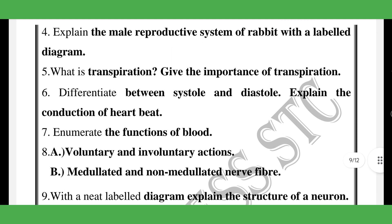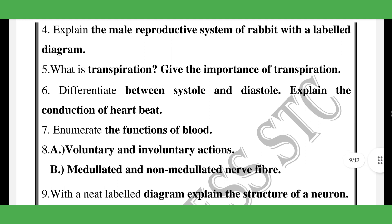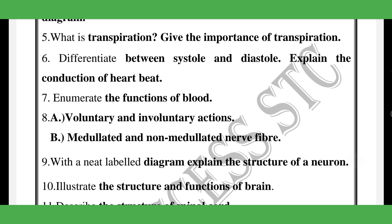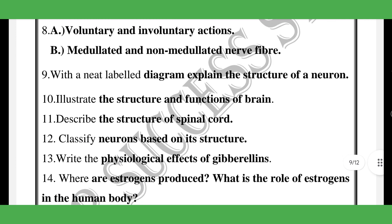Systole and diastole. Explain the conduction of heartbeat. Functions of blood — four-mark. Compare seven-mark. Voluntary and involuntary actions. Myelinated and non-myelinated nerves. Structure of neuron. Function of brain. Structure of spinal cord. Nervous system overview.